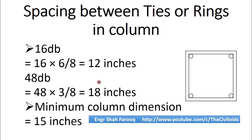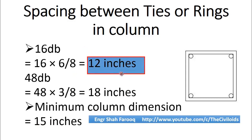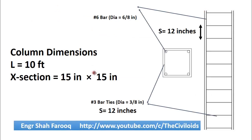Now we have three values for the spacing: 12 inches, 18 inches, and 15 inches. Remember that the minimum of these three values governs. The minimum is 12 inches, so the 16db equation controls, and the spacing between the ties or rings in this column is 12 inches. This is the maximum allowable spacing — you cannot use a larger value than 12 inches. By using the ACI 318 method, the spacing between two ties is determined to be 12 inches.